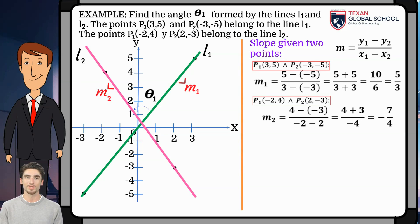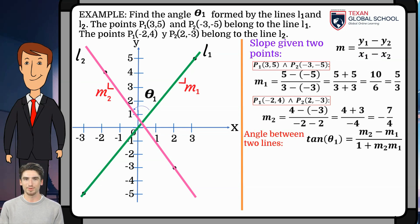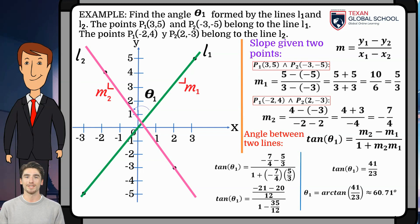Now, use the formula shown by substituting the values of the slopes. By substituting and simplifying, results that the tangent of theta1 equals 41 over 23. To solve for theta1, use arctangent, or the second function on the calculator, of 41/23. Then, obtain an angle of two lines theta1 of 60.71 degrees.